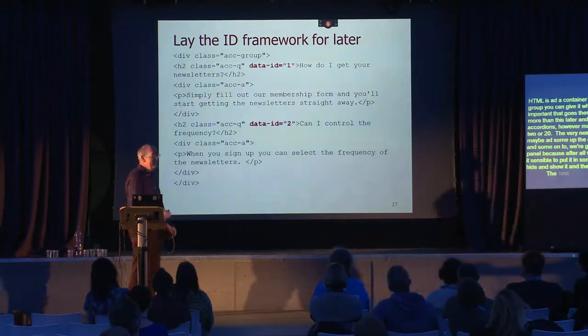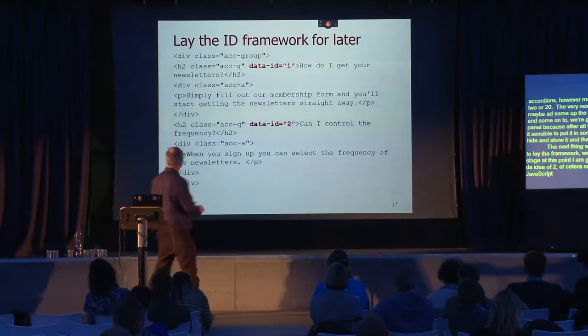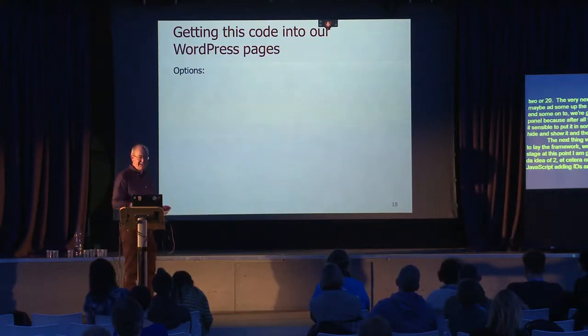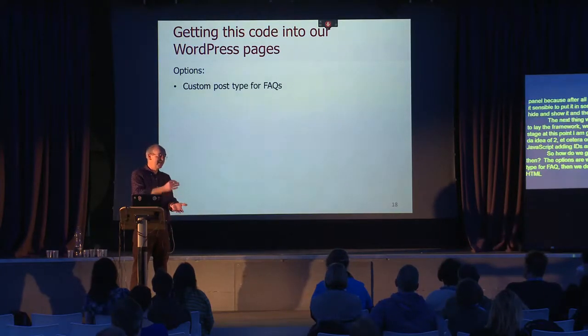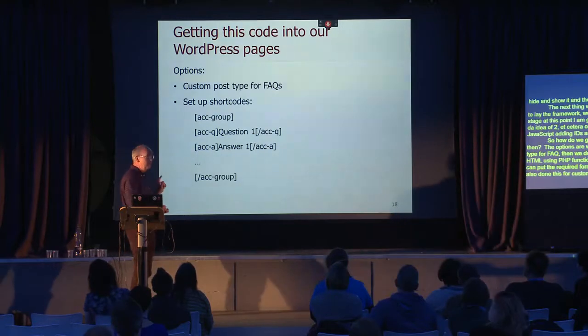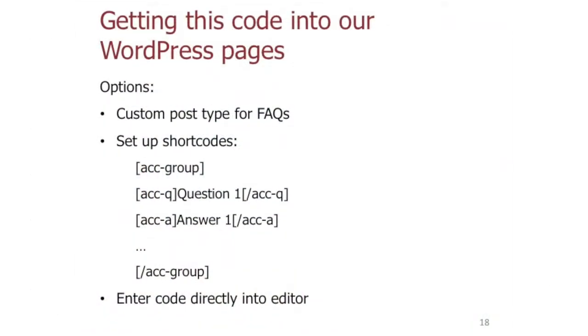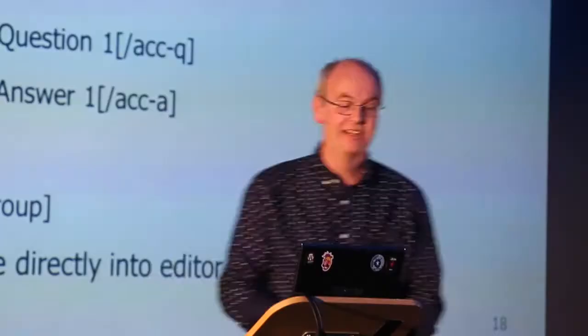Next we add data-IDs — data-ID of 1, 2, etc. — which will drive our JavaScript adding IDs later on. To get this code into WordPress, options include a custom post type for FAQs with a custom query outputting the required HTML via PHP, using shortcodes like an 'acc-group' shortcode, or putting the code directly into the editor — whichever approach you prefer.